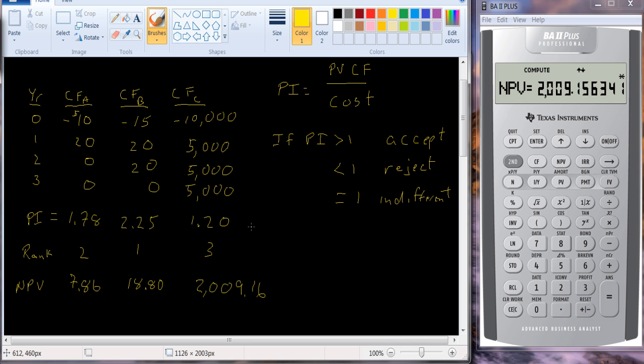So if we were going to rank these based on NPV, we would rank project C first, project B second, and project A third.